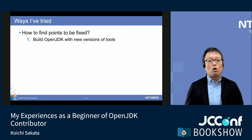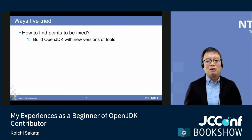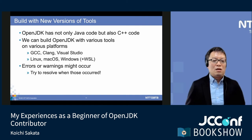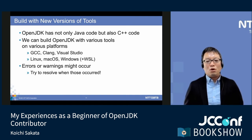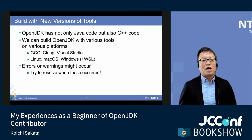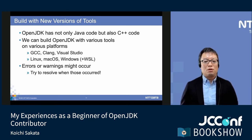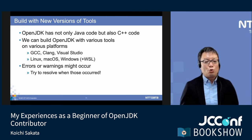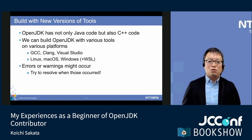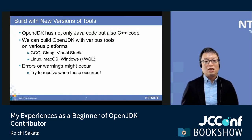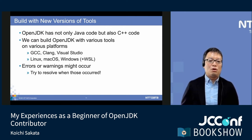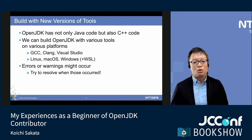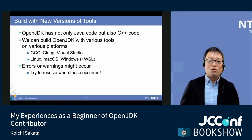It's effective to build OpenJDK with new versions of tools. As you may know, OpenJDK has not only Java code but also C++ code. Especially, JVM is written in C++. So we need tools for C++ to build it. For example, we use GCC on Linux, Clang on macOS, Visual Studio on Windows. You can also build it on WSL, Windows Subsystem for Linux.